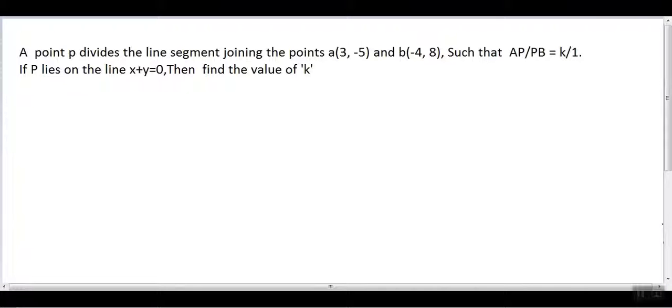Hi guys, welcome to the session. My name is Prakash, math tutor. Let's solve the question I have written on the whiteboard. Here, a point P divides the line segment joining points A and B such that the ratio AP to PB is k to 1. Also, if P lies on the line x plus y equals zero, we need to find the value of k.